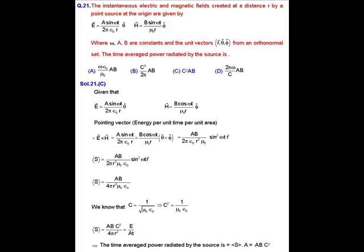Time averaged power radiated by the source is nothing but pointing vector into area because we know that pointing vector is nothing but energy per unit time per unit area. Now, pointing vector can be calculated by just considering the expression S equals to E cross H. If we start calculating E cross H, we have been given the expression for E and H where E is A sin omega t upon 2 pi epsilon 0 r and the magnetic field is B sin omega t upon mu 0 r.